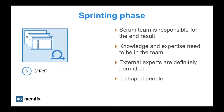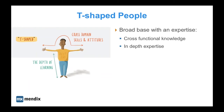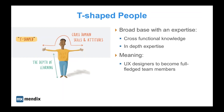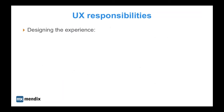T-shaped people are those with a lot of cross-functional knowledge combined with in-depth expertise. If we plot that onto successfully integrating UX, it means the following: UX designers need to become full-fledged team members — it's the only way UX can have a good fit with agile projects. And business developers need to expand their broad base with UX knowledge. Zooming in on UX responsibilities during sprints, we can identify several key areas and assets.